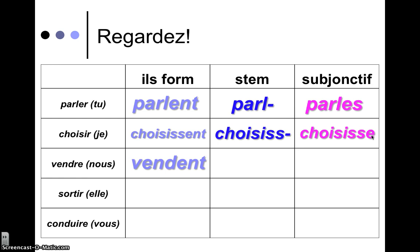Here's an -RE verb: 'vendre.' So 'ils vendent' — take off the -ent, there's your stem, and then your ending: 'vendions.' This looks just like the imperfect. So tons of similarities.